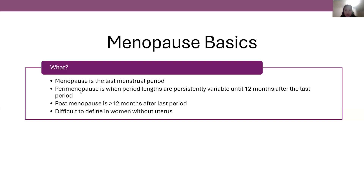Menopause is defined as the last menstrual period, but of course knowing which will be your last menstrual period can only be done in retrospect. You may become aware that you're around that time of menopause, or what we call perimenopause, as in the lead-up to this your periods can become consistently irregular and you may start to experience some menopause symptoms. This can occur several years before that last period and includes the 12 months after it. Once past this 12 months you're considered to be in the post-menopausal phase. This definition is a bit limited because it relies on you having periods, which doesn't apply to women who don't have a uterus or those on contraception that renders them without regular periods.